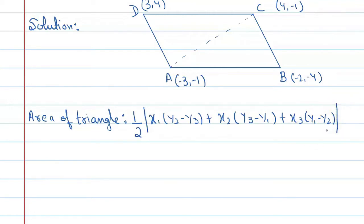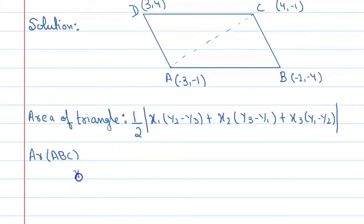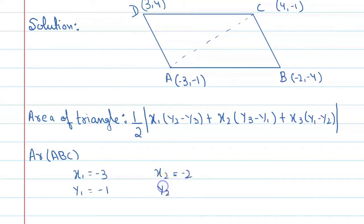Now, to find area of triangle ABC, we assign the coordinates: x1 = -3, y1 = -1; x2 = -2, y2 = -4; x3 = 4, y3 = -1.